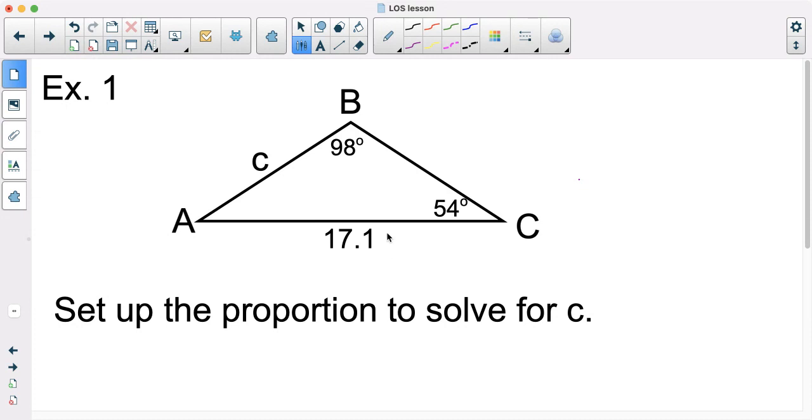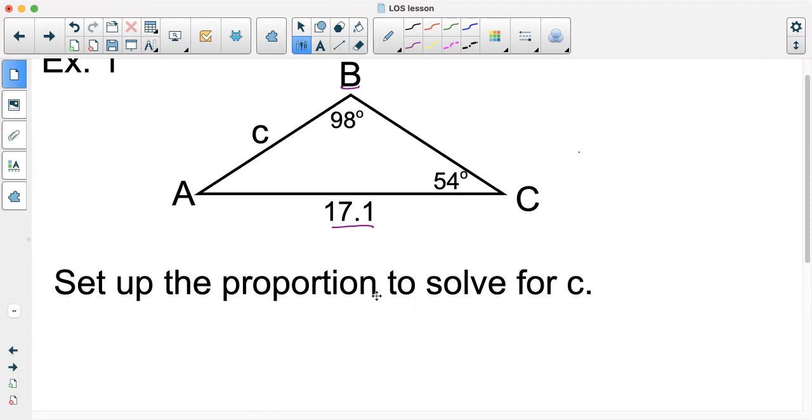We're going to set up a proportion to solve for c. Take a look, I have a corresponding angle inside. Now I don't need to write all three fractions down, and it doesn't matter what the letters are. So basically, if I do the angle on top, then I'm going to do the sine of B over b equals the sine of big C over little c. And it's just a plug and chug. So I need to do the sine of 98 degrees divided by 17.1, and that's going to be equal to the sine of 54 degrees divided by whatever side c's measure is. And that's what we're going to use to solve. We're going to cross multiply.